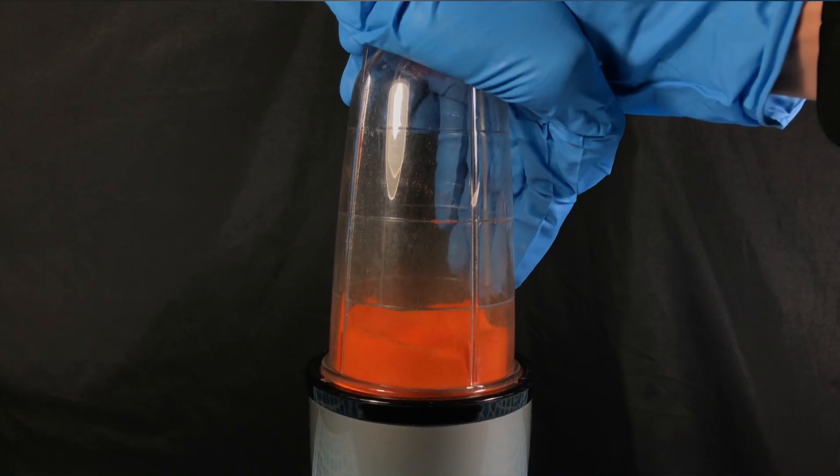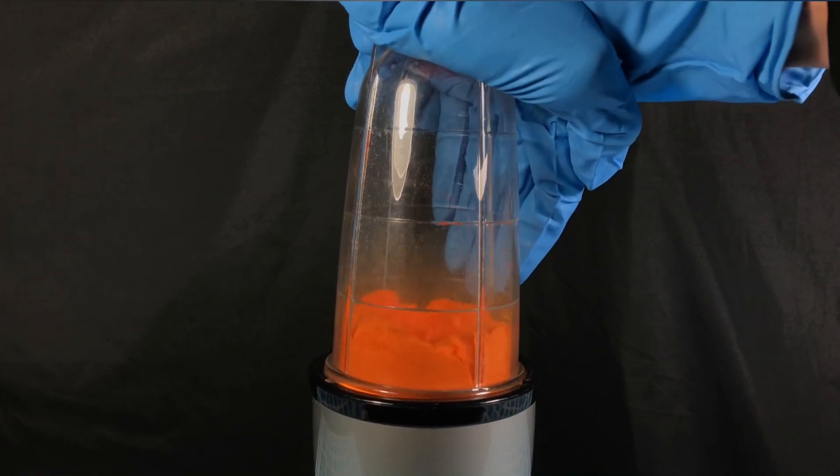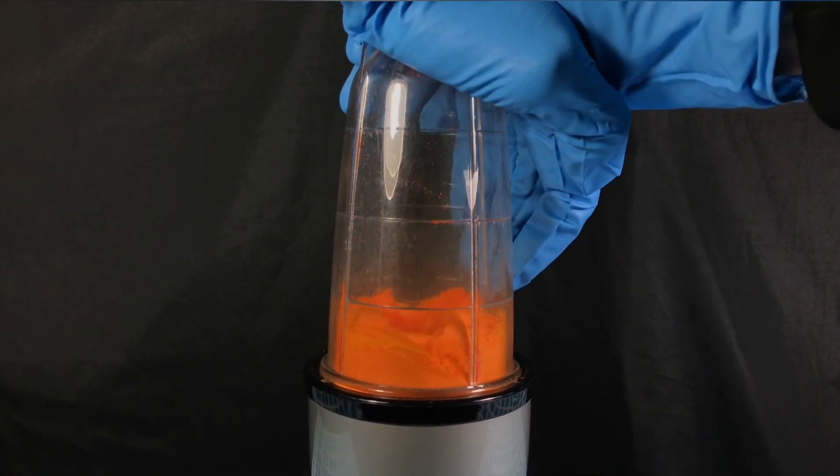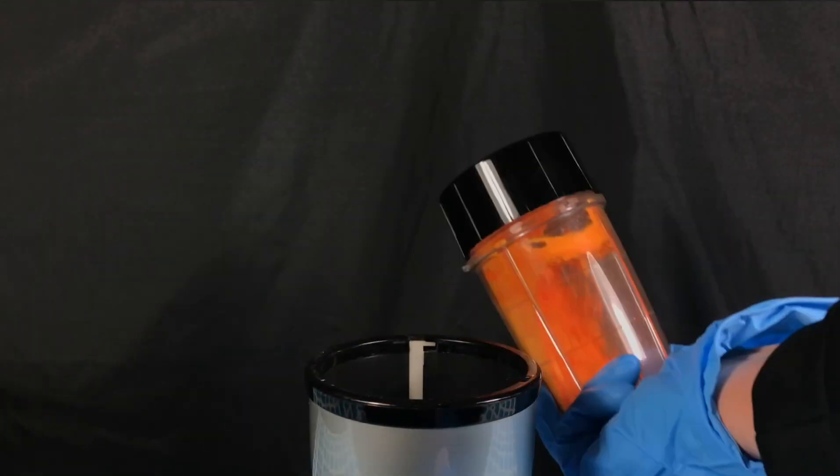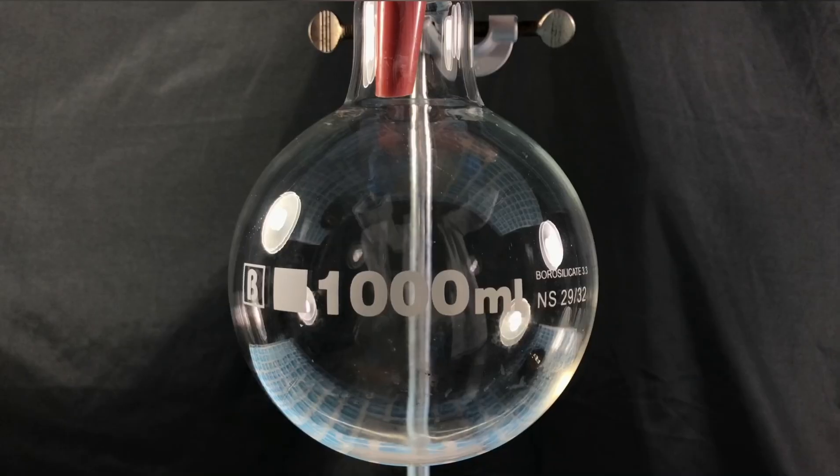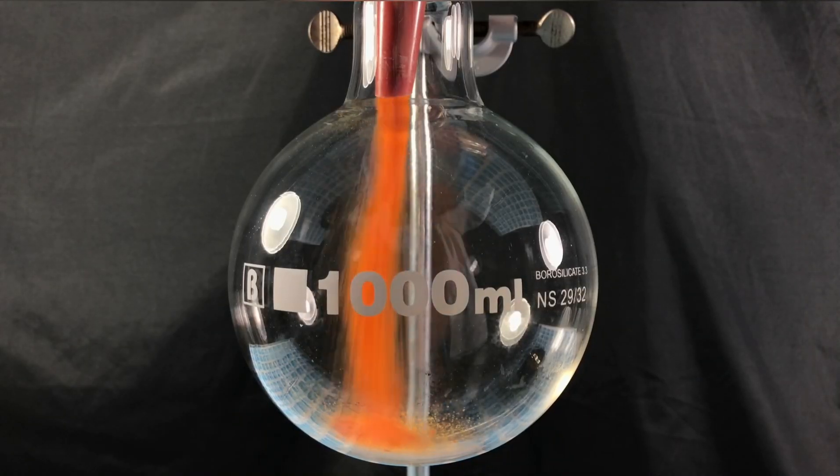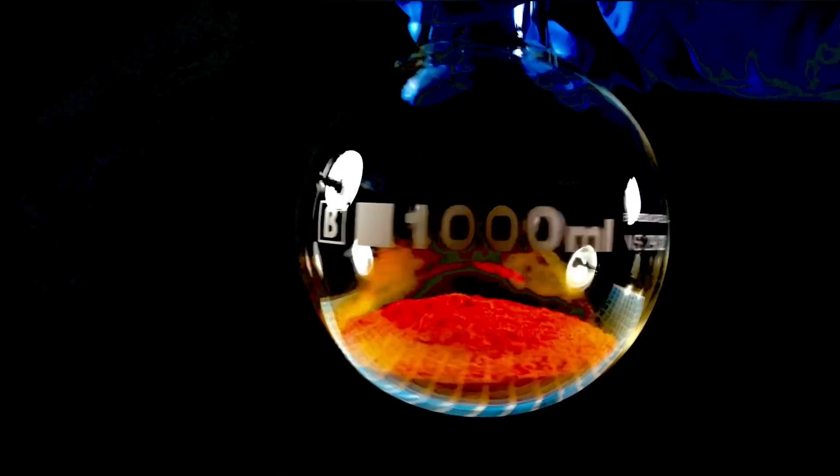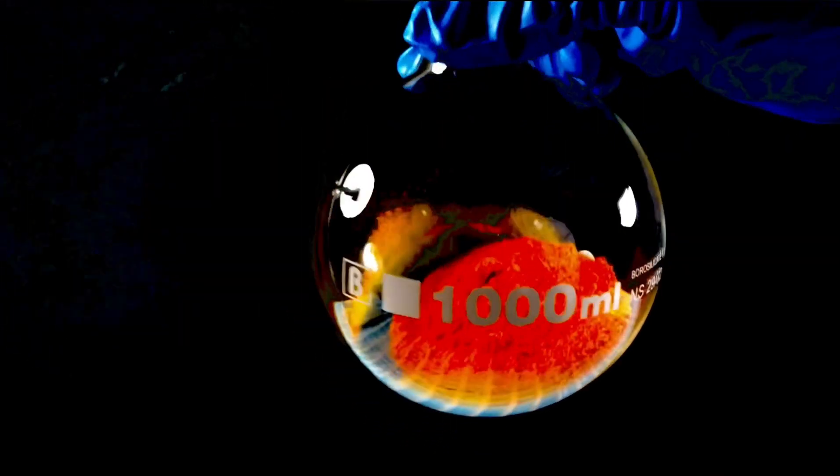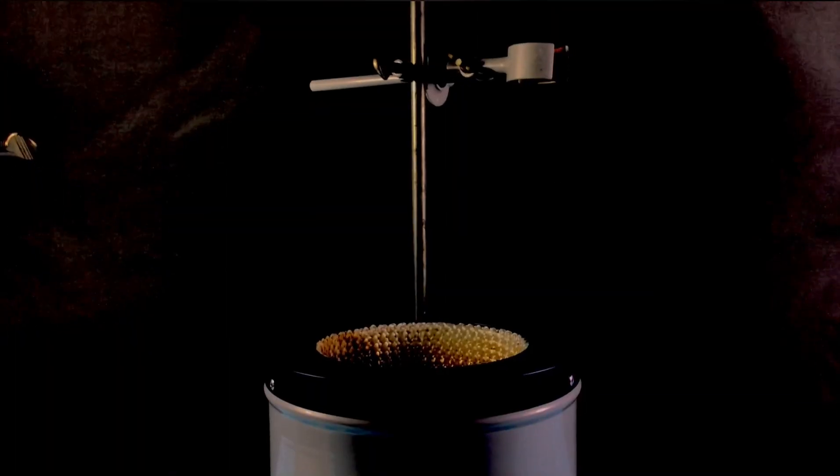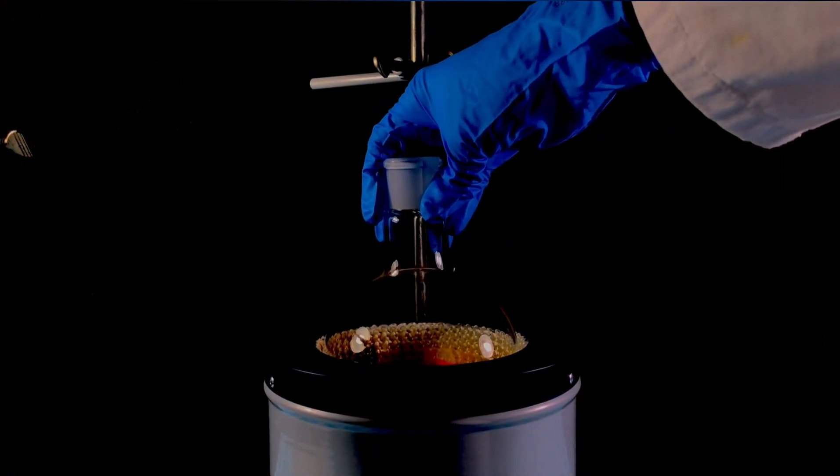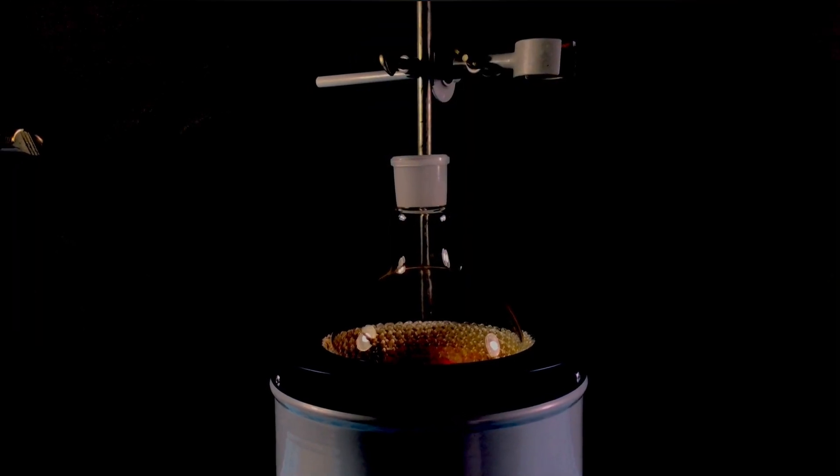When this mixer is opened, a lot of dust will escape. A gas mask was worn while transferring the mixed powders to a 1 liter round bottom flask. We took this flask and put it into heating mantle. No stir fish was used. The large amount of powder would have prevented the stir fish from working.